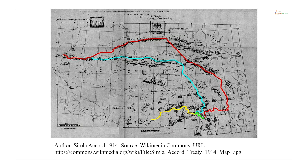Let us first look at the boundary dispute and summarize it a bit, as we have done this before in the last lecture. India became independent on the 15th of August 1947. Before that India was ruled by the British government, and the Chinese Communist Party came to power on 1st of October 1949.